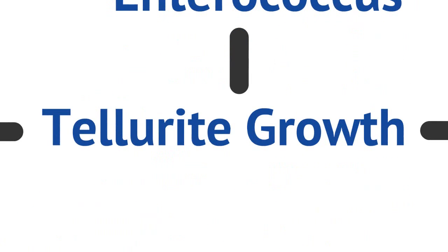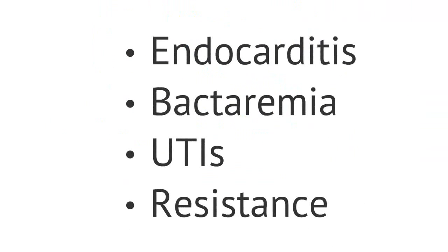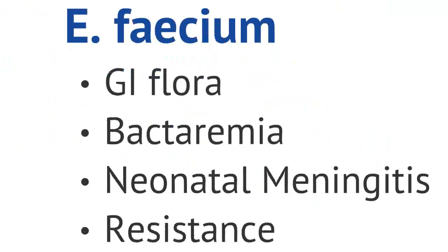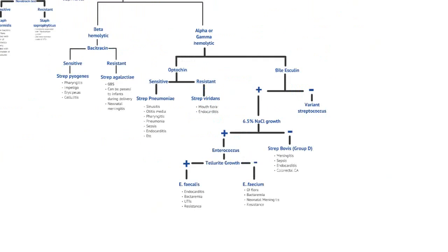The organisms that do grow in 6.5% sodium chloride are termed enterococcus. Enterococcus is further differentiated on a tellurite agar plate. If an organism grows on a tellurite plate, then it's Enterococcus faecalis. This organism is responsible for endocarditis, bacteremia, urinary tract infections, and more recently has developed vancomycin resistance, causing it to be known as VRE or vancomycin-resistant enterococcus. Those that are tellurite-negative — meaning they don't grow on this media — are called Enterococcus faecium. It's part of GI flora and can also cause bacteremia and neonatal meningitis, and has also developed resistance to many antibiotics including vancomycin, also becoming VRE.